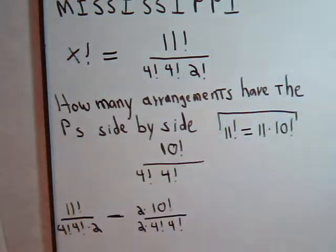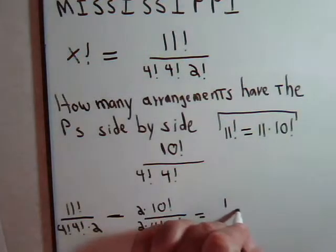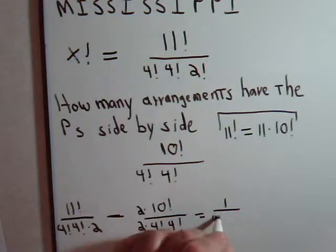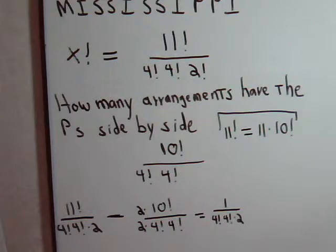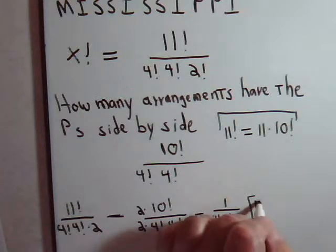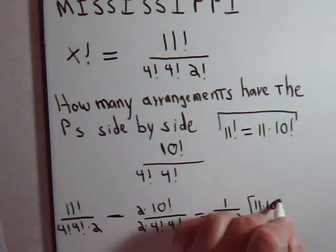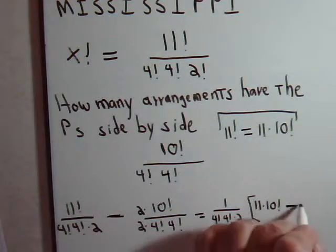We discussed this in previous videos, so hopefully that's pretty obvious to you. So let's see, we can rewrite this. We'll factor this out, times 11 factorial, which is this, 11 times 10 factorial minus 2 times 10 factorial.